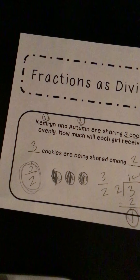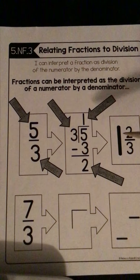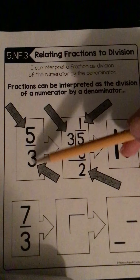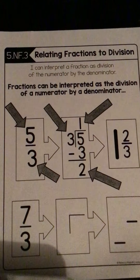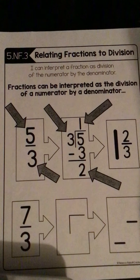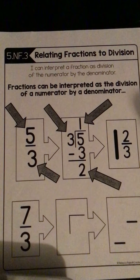That's the first example, so I don't expect you to fully understand just yet. The next paper we're going to glue into our notebook goes from cookies to straight fractions to division. Fractions can be interpreted as the division of a numerator by a denominator. Anytime the bigger number is on top, that's called an improper fraction. Fractions are division, division are fractions, fractions are related to decimals — that's where we're going.